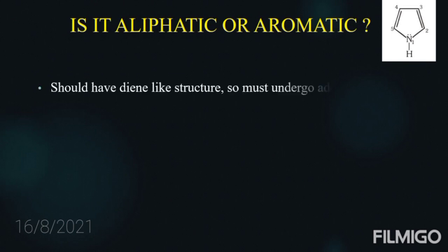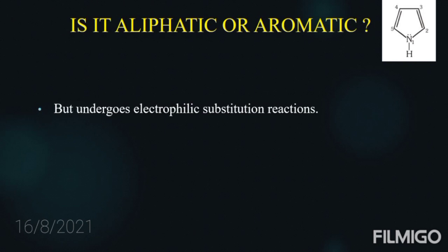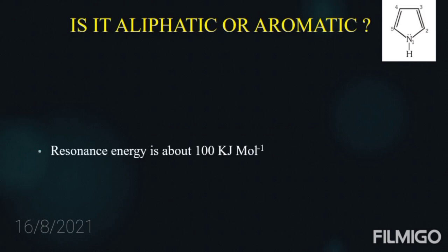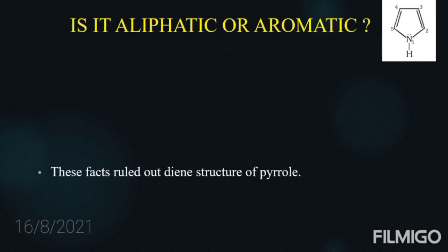The molecular formula of pyrrole is C4H5N. As seen from the structure, pyrrole has two double bonds and resembles a diene. However, unlike conjugated dienes which show addition reactions, pyrrole does not show addition reactions — instead it shows electrophilic substitution reactions such as nitration, sulfonation, and halogenation, which are properties of aromatic compounds. Furthermore, conjugated dienes have a resonance energy of only 12.5 kJ/mol, whereas pyrrole has a resonance energy above 100 kJ/mol, indicating aromatic character. This rules out pyrrole having a simple diene-like structure.